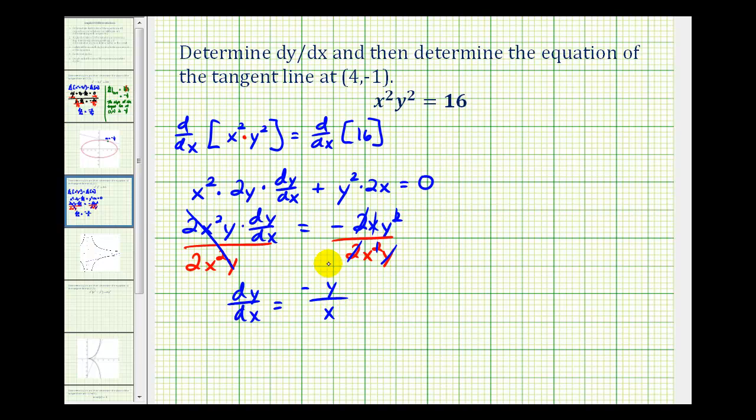So now that we have our derivative, we can determine the slope of the tangent line at the point (4, -1). We'll replace y with negative 1 and x with 4. So the slope of our tangent line at the point (4, -1) is positive one-fourth.